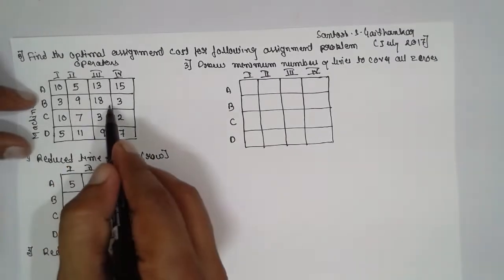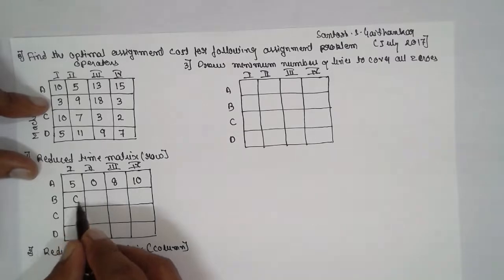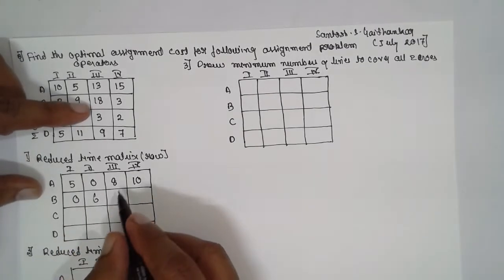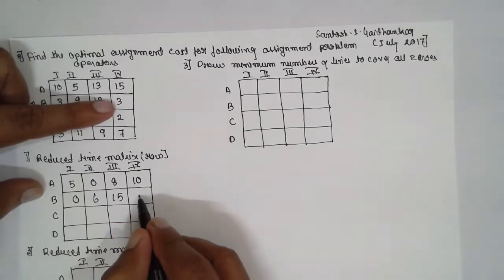Now smallest is 3 here in this row. 3 minus 3 is 0, 9 minus 3 is 6, 18 minus 3 is 15, 3 minus 3 is 0.